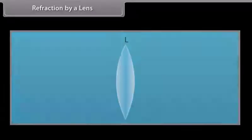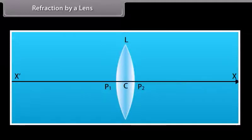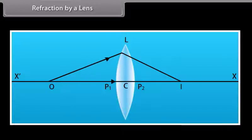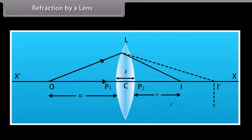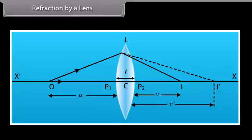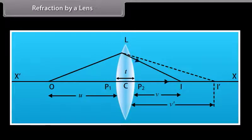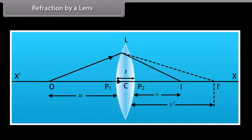Refraction by a lens. Suppose L is a thin lens. The refractive index of the material of the lens is N2 and it is placed in a medium of refractive index N1. The optical center of the lens is C and X-X is the principal axis. The radii of curvature of the surfaces are R1 and R2 with poles P1 and P2. The thickness T is very small. O is a point object at distance U from pole P1. The first refracting surface forms image I′ at distance V′ from P1. I′ acts as a virtual object for the second surface, and after refraction, the final image is formed at I.